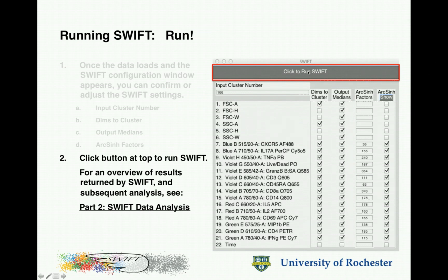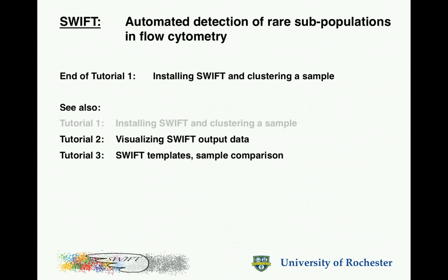So once these parameters have been set, you're ready to proceed with the actual clustering run. Simply click the button at the top and Swift will start to analyze the data and write the results into the same folder. All of the samples in the folder will be processed without any further input using all the parameters you've just set up. Once that's all finished, you can move on to tutorial two, which talks about visualizing the Swift output data and manipulating it for examination and analysis. Tutorial three describes how to extend the Swift clustering to multiple samples by making Swift templates, assigning those to many samples, and then rigorously comparing between samples.